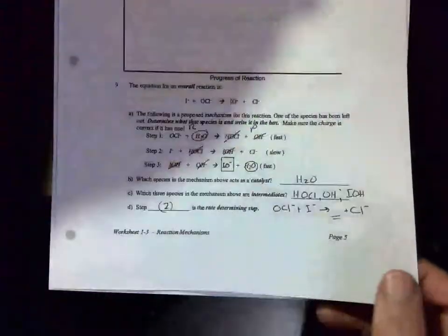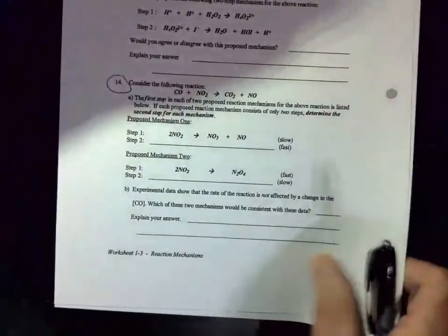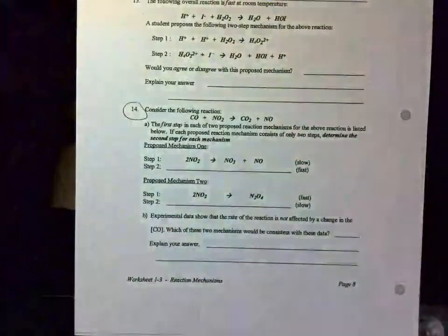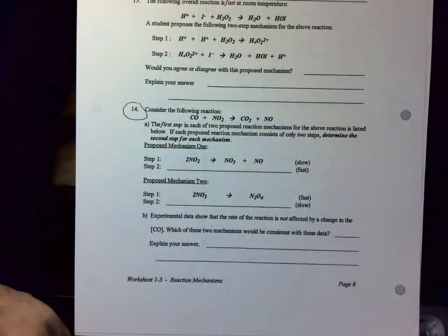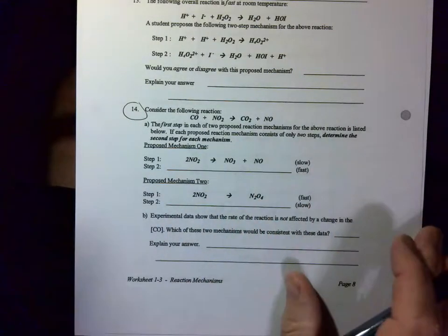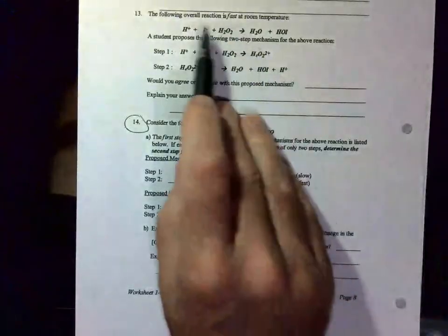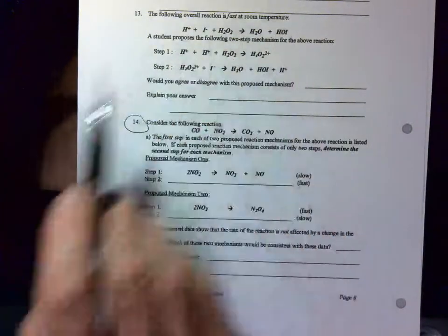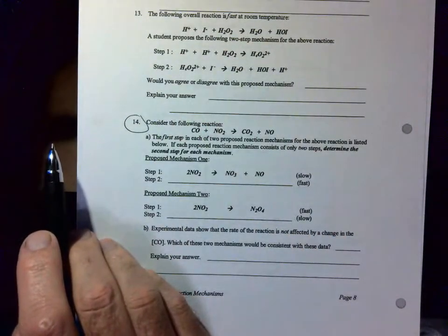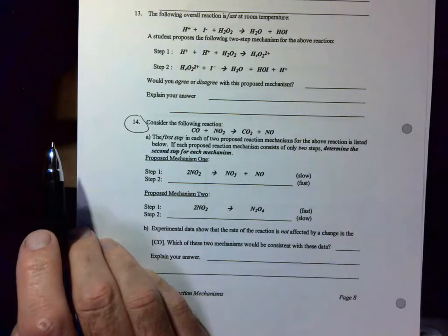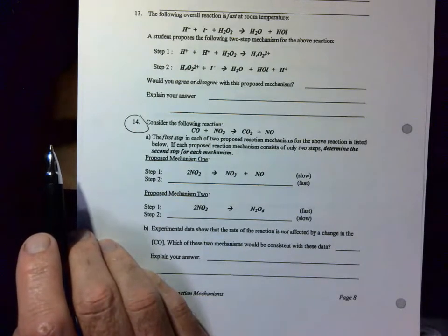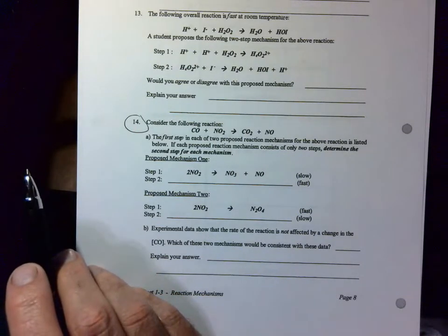Let's take up a couple of other questions. That was number nine. This is question number 13. The following overall reaction is fast at room temperature. A student proposes the following two-step mechanism for the above reaction. Would you agree or disagree?